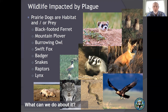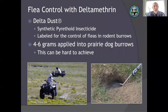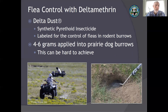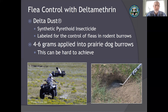Given how widespread this is, is there anything we can actually do about it? The main tool we've been using — and that folks across North America use — is vector control with an insecticide called deltamethrin, or a product sold as Delta Dust. It's a synthetic insecticide labeled for use in prairie dog or rodent burrows. The goal is to apply four to six grams of this powdered insecticide dust into prairie dog burrows. Although this sounds simple, it's actually quite hard to achieve.